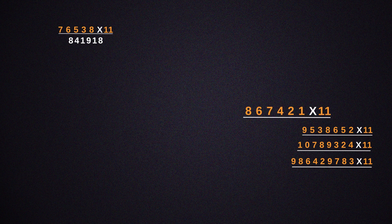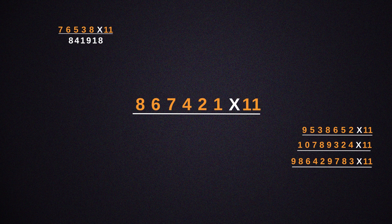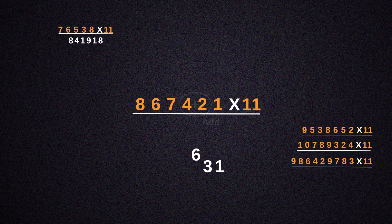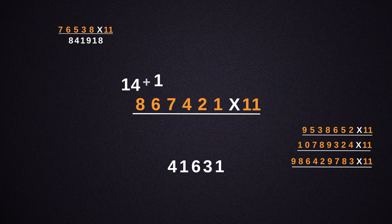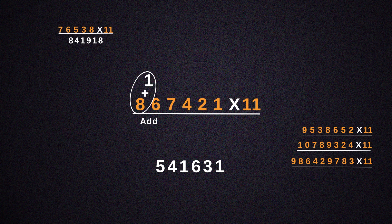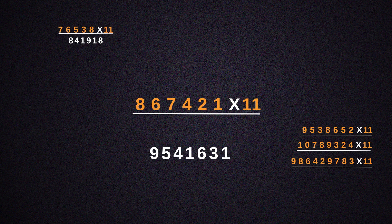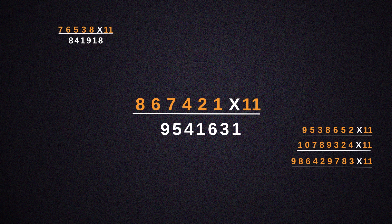Next, let's look at 867,421 times 11. First, we'll write 1 as it is. Then 2 plus 1, which is 3. Then 2 plus 4, which is 6. Then 4 plus 7, which is 11 — so write 1 in the answer. Then we do 6 plus 7, plus the 1 carried over, giving us 14. So write 4 in the answer and the 1 gets carried over once again. 8 plus 6 plus 1 gives us 15 — so write 5 in the answer, and the remaining 1 gets added to 8. This process gives us the final answer as 9,541,631.